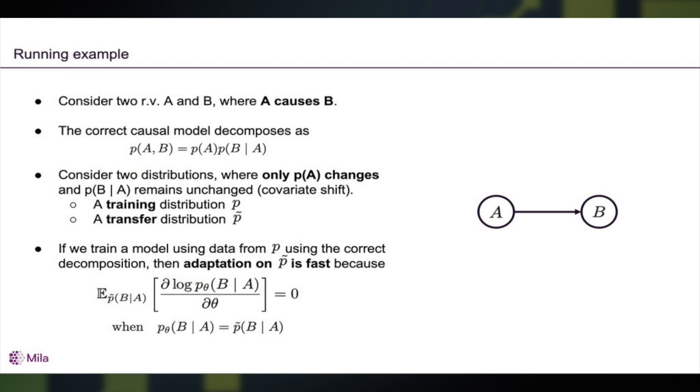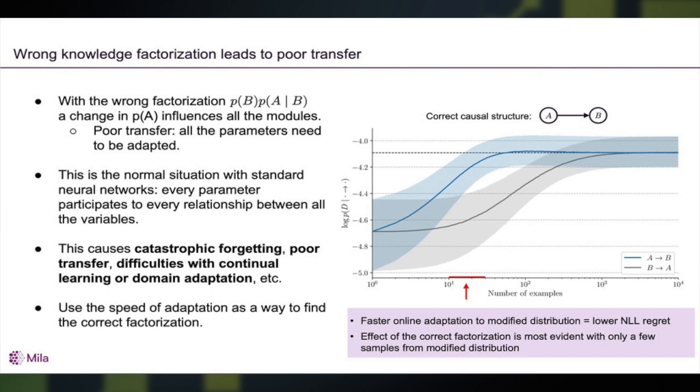The parameters are going to have a zero gradient when we go to the modified distribution for which we only have a few examples. So what it means is that when we go to this transfer setting, the parameters of the model that has the correct causal structure can learn faster, and we see this in experiments.